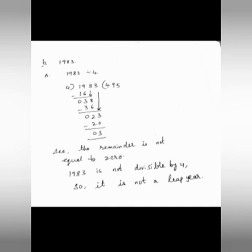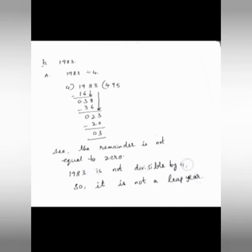The remainder is not equal to 0. Therefore, 1983 is not divisible by 4, so it is not a leap year. Is it clear, children? If the year is not divisible by 4, we say it is not a leap year. If it is divisible by 4, we say it is a leap year. Year 1983 is not divisible by 4, so it is not a leap year.